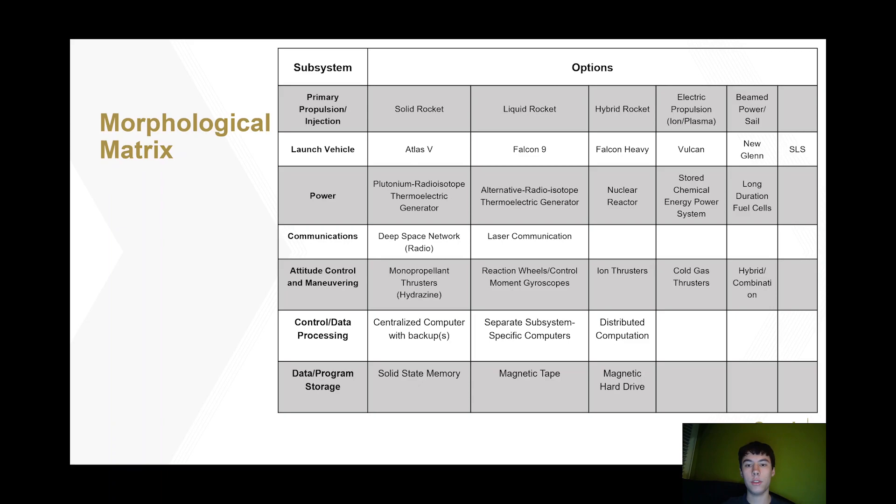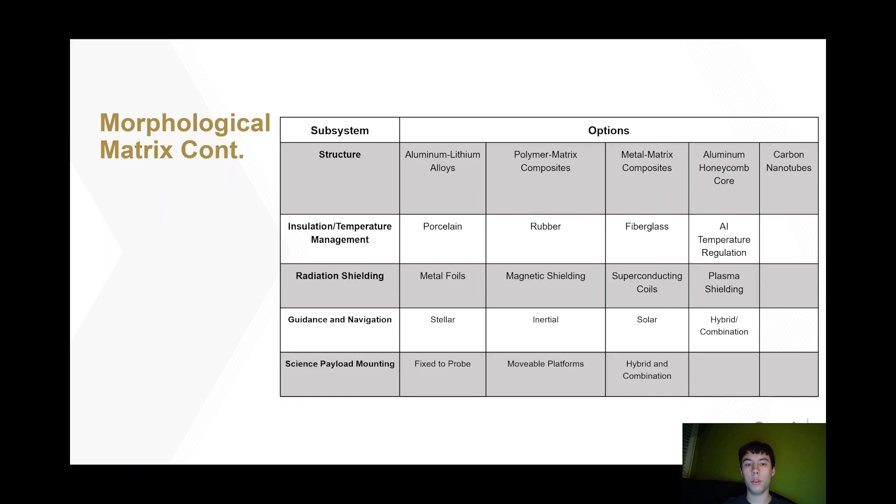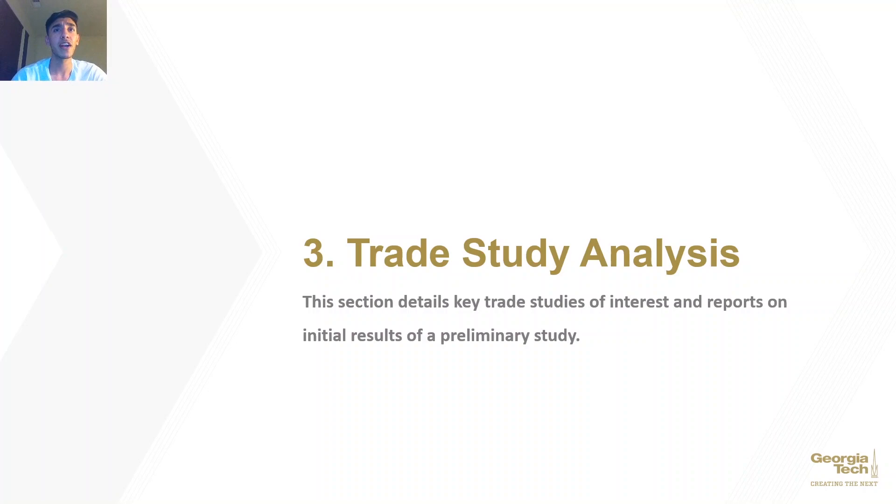And this will be elaborated on in the next section, which is our trade study analysis. So, continuing forward after creating the morph matrix you just saw, I'd like to discuss our trade study analysis for a specific subsystem on board the spacecraft and how we came to choosing which subsystem to perform a preliminary study.